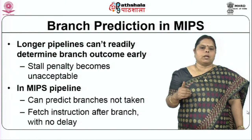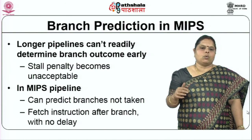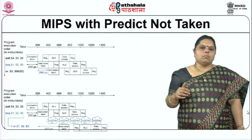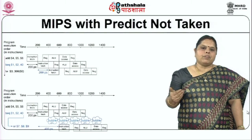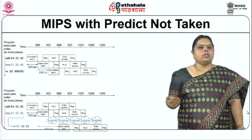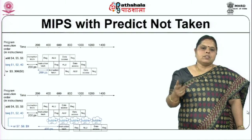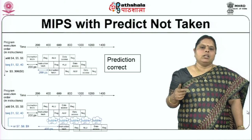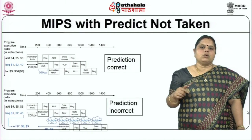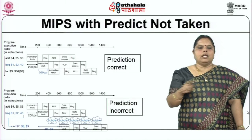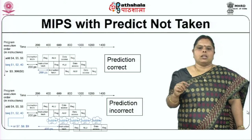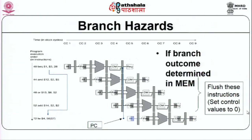In the MIPS pipeline, you can predict branches as not taken and fetch the instruction after the branch without any delay. If you assume branches are predicted not taken, you only have to fetch from the sequential path — PC plus 4 is already known. If the prediction is correct, you pay no penalty. If the prediction is incorrect, a bubble is introduced, which is the penalty you pay.